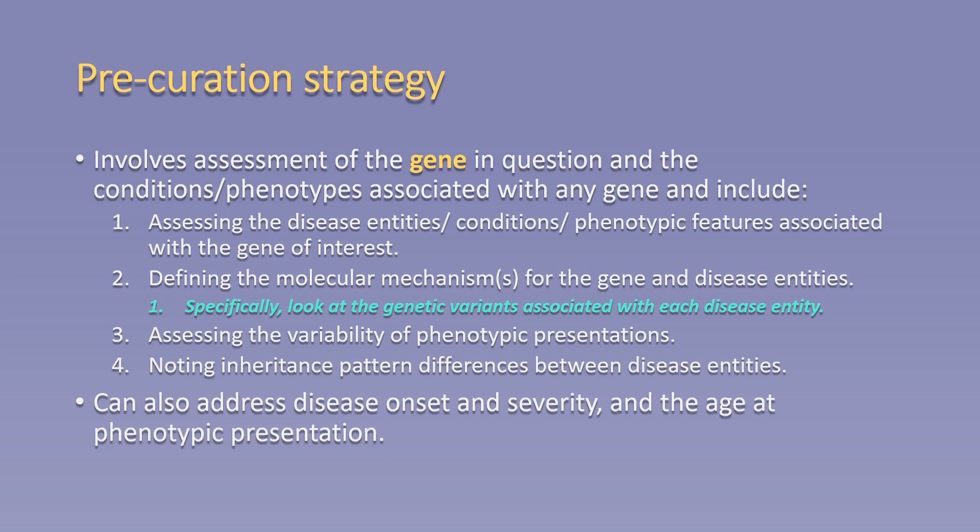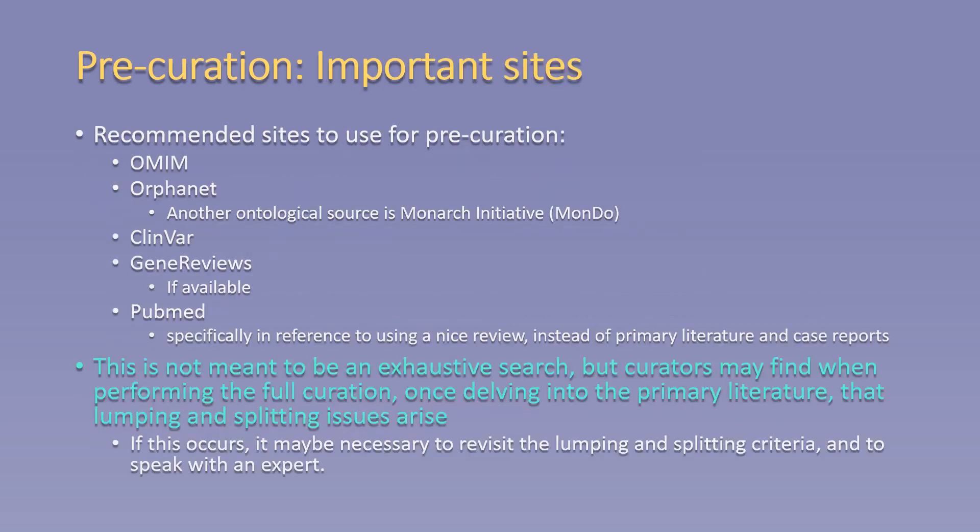As shown, it involves looking over the criteria for lumping and splitting, including recording the known assertions, reviewing the molecular mechanism, and more specifically looking at variant overlap between asserted disease entities, as well as noting the phenotypic features associated with each disease entity and the inheritance patterns. For pre-curation, it is recommended to start with sites such as OMIM and Orphanet to review the asserted disease entities for the gene in question.